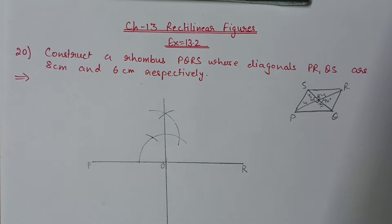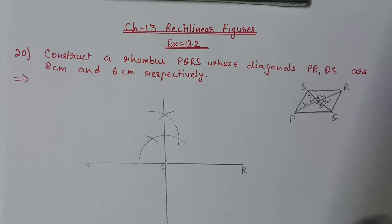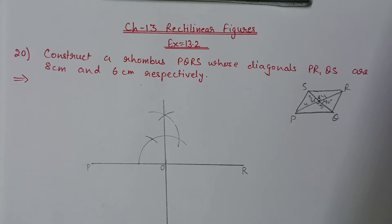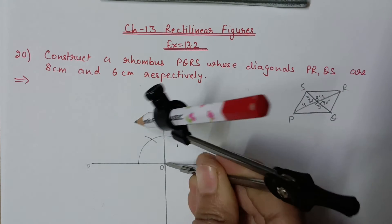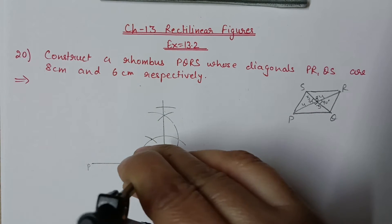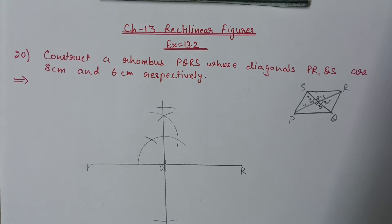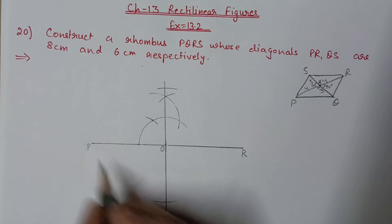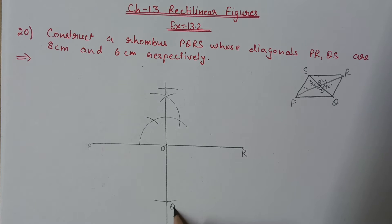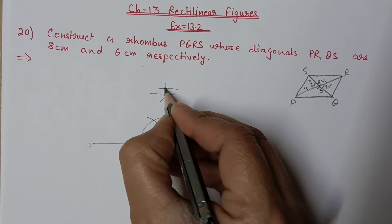Extend the 90 degree line in both directions. The other diagonal is 6 centimeter, meaning 3 centimeter up and 3 centimeter down. Take 3 centimeter in the compass, put one arc upward and one arc downward from center O. This gives the other two points of the rhombus — Q and S.